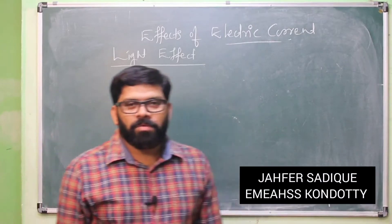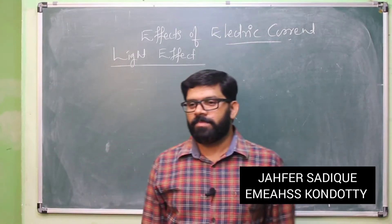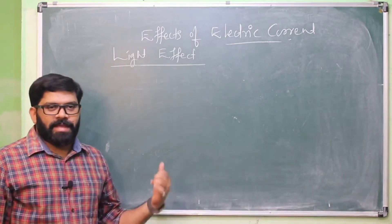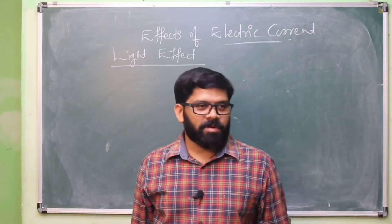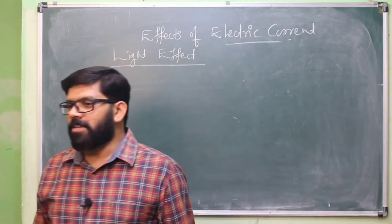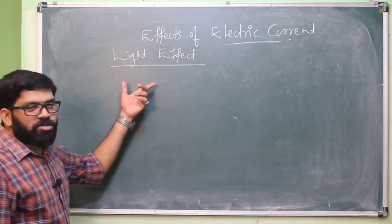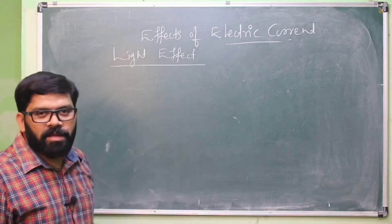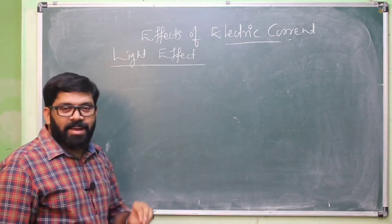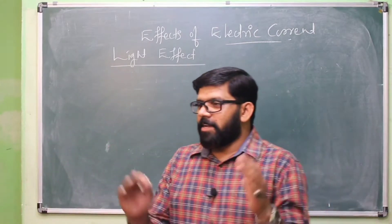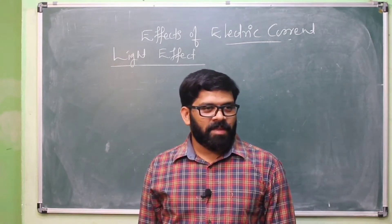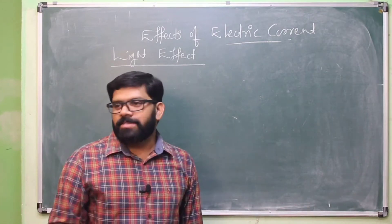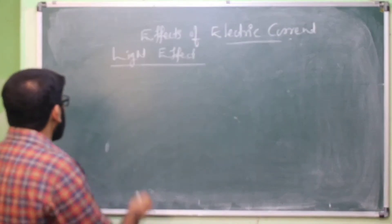Hi friends, now we are entering a new topic. In the last class we studied about the heat effect of electricity, including heating, oil safety fuse, and electric power. Now we are entering into the new topic: light effect of electricity. When electric current is passed through a conductor, light energy is produced. Bulb, tube light, and LED bulb are all examples of the light effect of electricity.